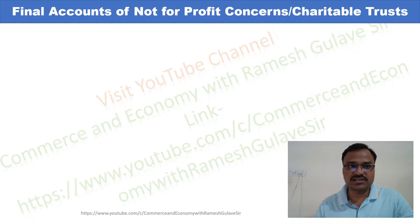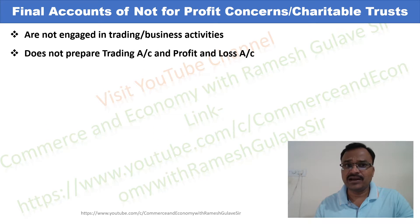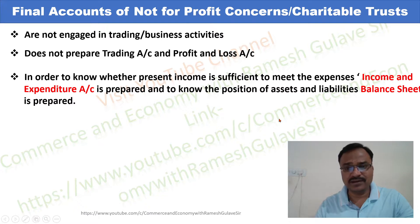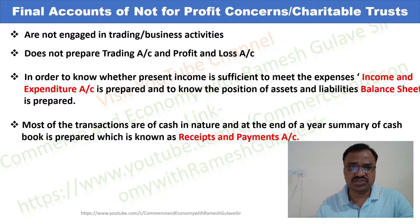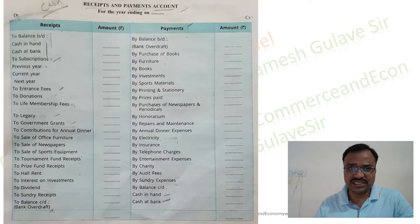Welcome friends. We are going to discuss the final accounts of not-for-profit concerns. As not-for-profit concerns are not engaged in trading or business activities, they do not prepare a trading account and profit and loss account. To know whether present income is sufficient to meet the expenses, they prepare an income and expenditure account, and to know the position of assets and liabilities they prepare a balance sheet. The nature of transactions of not-for-profit concerns is generally cash in nature, and at the end of the year they prepare a summary of the cash book, which is known as the receipts and payment account. Here we are going to discuss the specimen formats of receipts and payment account, income and expenditure account, and balance sheet of not-for-profit concerns.